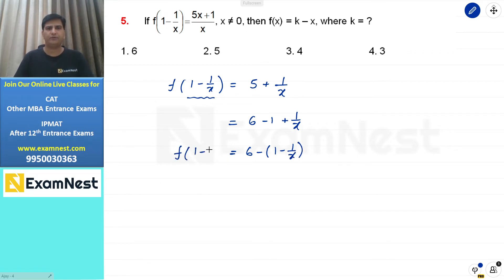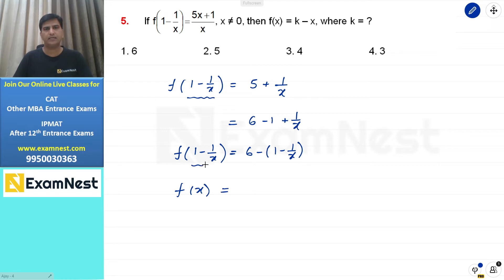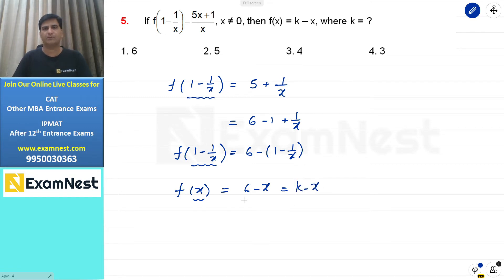f(1 - 1/x) = 6 - (1 - 1/x)। अब f(x) निकालने के लिए 1 - 1/x को x से replace करते हैं, तो f(x) = 6 - x। Given है f(x) = k - x, compare करने पर k = 6। First option हमारे इस question का answer होगा।